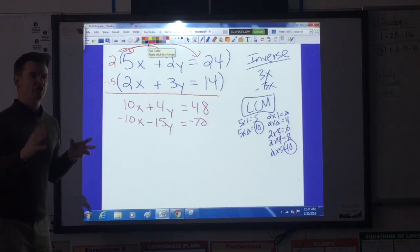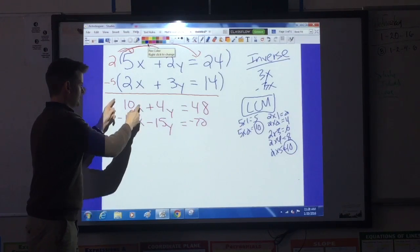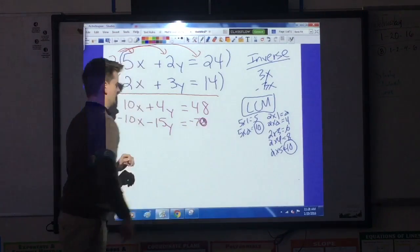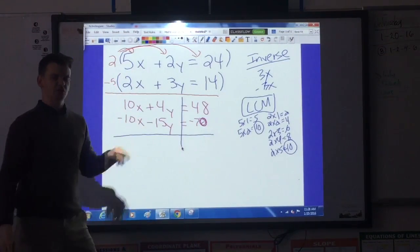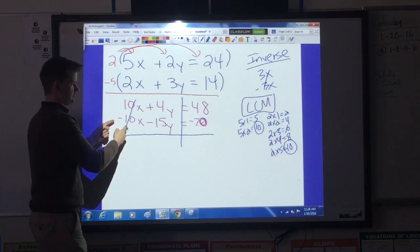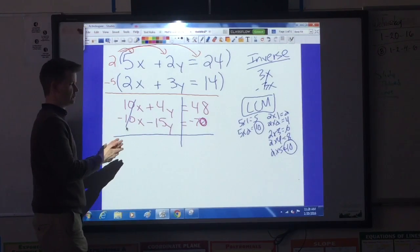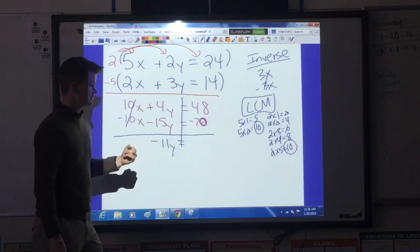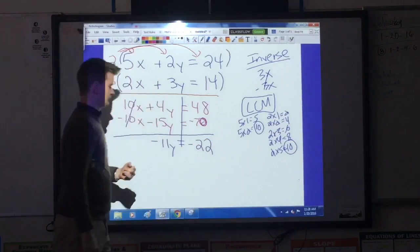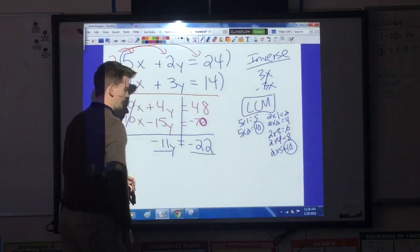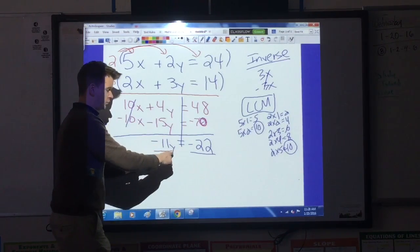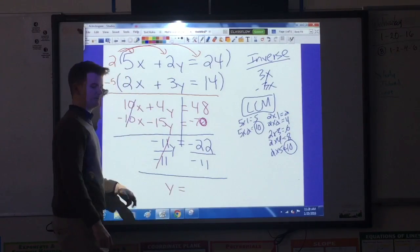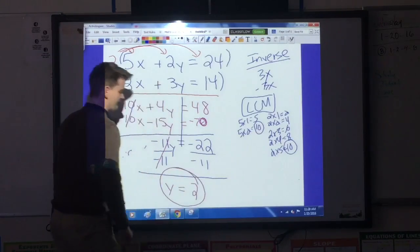Once I've finished the multiplication, I've created exactly what I need. I look at my x terms. They are inverse coefficients, which will allow me to go in and cancel them out and solve for y. So, we get to the process of combining the equations and eliminating what we don't need. The positive 10x and negative 10x will cancel out. Positive 4y and a negative 15y, when I combine those terms, I get a negative 11y. Bring down the equal sign. A positive 48 and a negative 70, when I combine those numbers, I will get a negative 22. I'm now down to a one-step equation. I'm going to divide both sides by my coefficient, which is negative 11. These negative 11s will cancel. When I'm dividing two negatives, make a positive. 22 divided by 11 is 2. So I have half the answer.